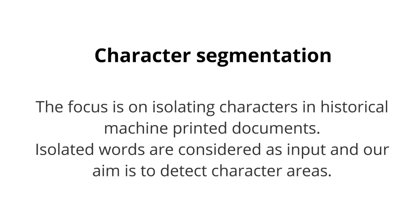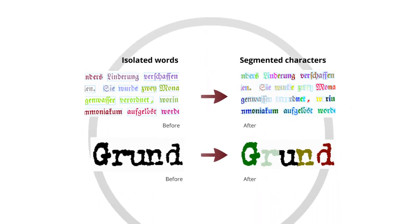In character segmentation, the focus is on isolating characters in historical machine-printed documents. We consider as input isolated words, and our aim is to detect character areas. Here are examples of segmentation on the word level from which we get the segmentation on the character level.